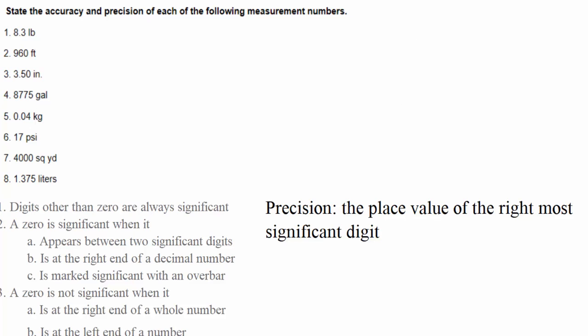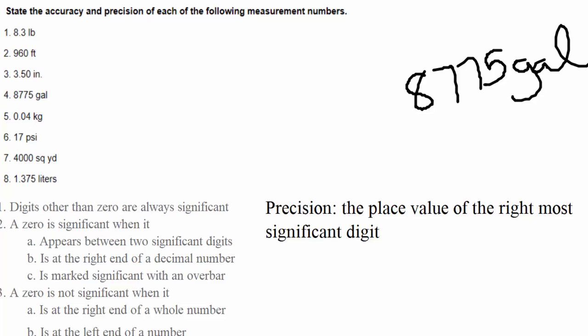Then we have 8755 gallons — every single digit was significant, and the right-most place value is the ones place. So you can say it's precise to the ones, or precise to the nearest gallon. Sometimes, depending on the unit, it's easier to just say precise to the nearest whole unit rather than saying ones place.